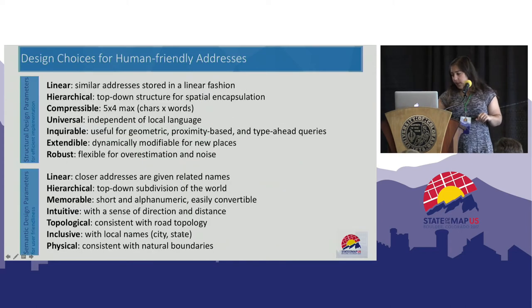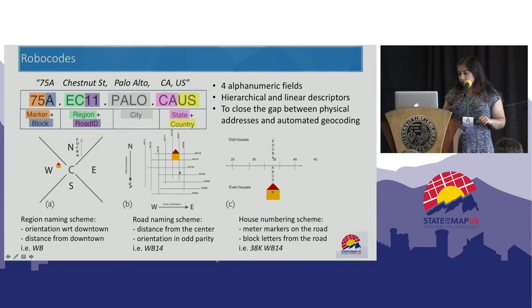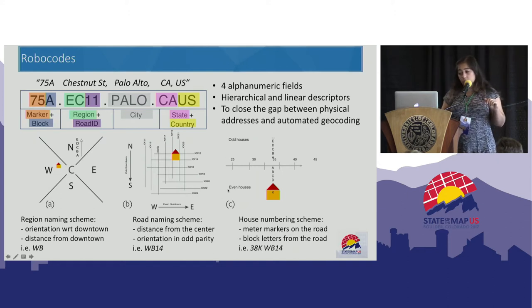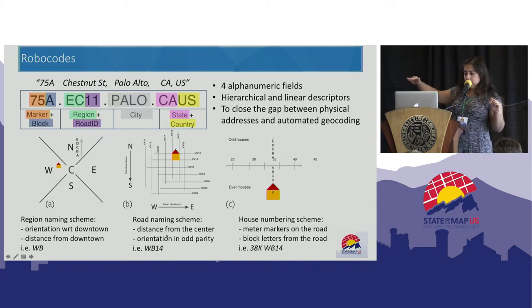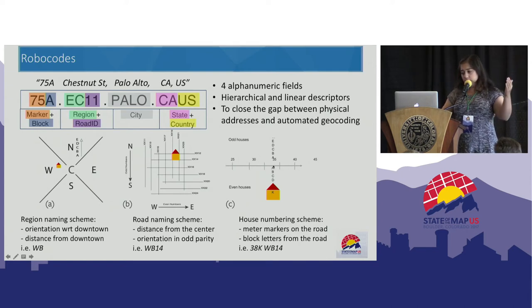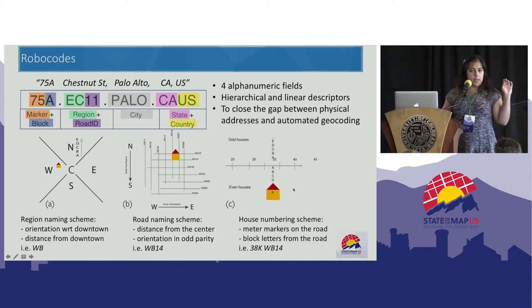The road naming scheme shows the distance from the center and contains orientation in odd parity. If a road is north-south bound, it is odd; if west-east bound, it is even. For this house, the region is WB and the road would be WB 14 — meaning it's the 14th road in that directionality. The house numbering uses meter markers starting from the beginning of the road and then offsets from the road, giving a full address like 38K WB 14.